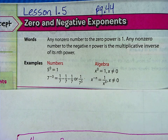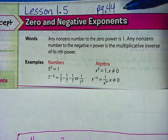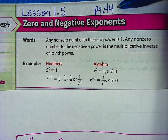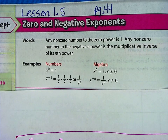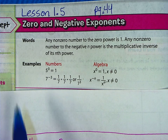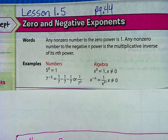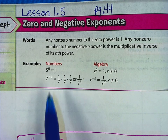This is lesson 1.5 on page 44, so if you are not there yet, go ahead and pause the video and open up your book to page 44. This lesson is all about zero and negative exponents.